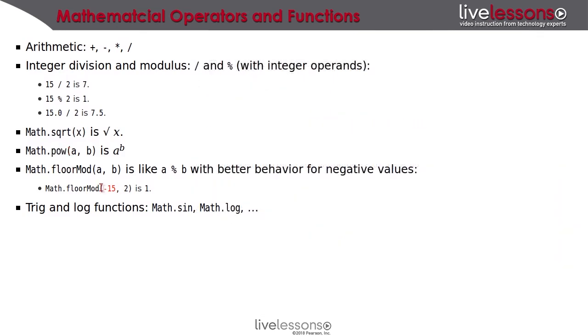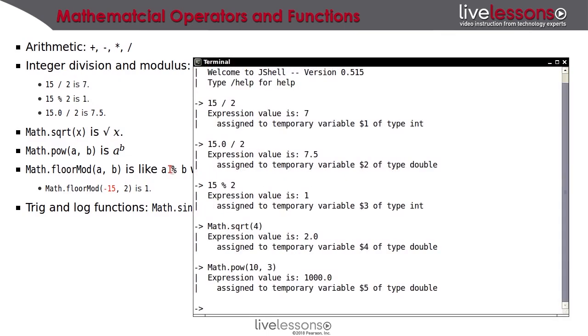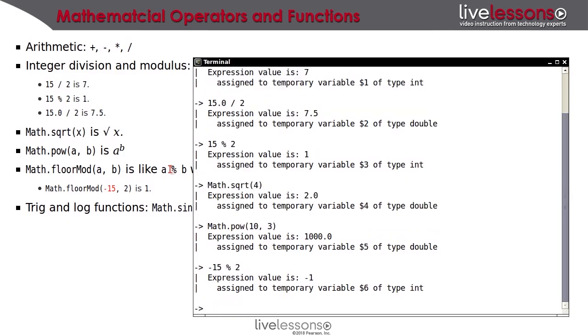Another useful function is floor mod, which is almost the same thing as the remainder, but with better behavior for negative values. For example, if you compute minus 15 mod 2, then the answer is minus 1, and that can sometimes be inconvenient, but if you compute floor mod of minus 15 and 2, then you get the answer plus 1. So if you're ever in a situation where negative remainders bother you, just think floor mod.